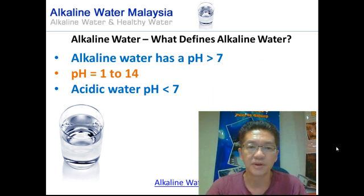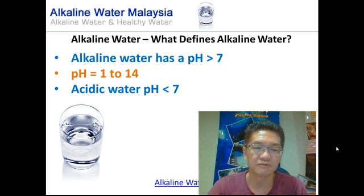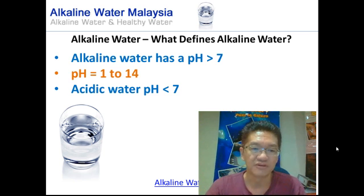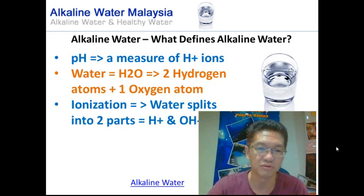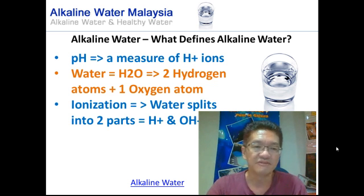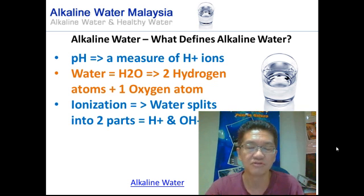First of all, alkaline water — most of us will know — has a pH higher than 7. The pH is basically a scale that ranges from 1 to 14. Acidic water has a pH lower than 7, and at a pH of 7, the water is neutral. Basically, pH is a measure of the concentrations of hydrogen ions.